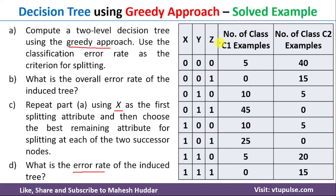To build the decision tree, out of these three attributes we need to select one attribute as the root node. We use the classification error rate as the criteria for identifying the root node. So first we will calculate the error rate of X, Y, and Z. The one which has the minimum error rate will be considered as the root node.